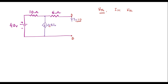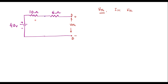When IX is 0, 0.8 IX also becomes 0, so this current source becomes 0, which means it acts as an open circuit. Therefore, we remove the 0.8 IX branch. Now, the voltage between terminals A and B is Vth. Since no current flows in the circuit, the voltage between A and B is simply 40 volts. Therefore, Vth is equal to 40 volts.